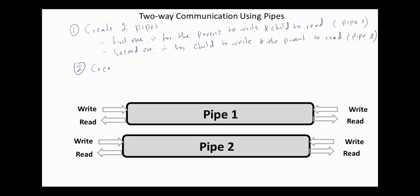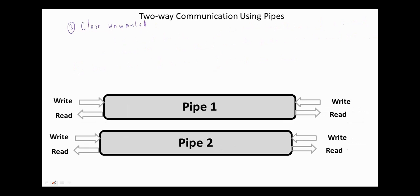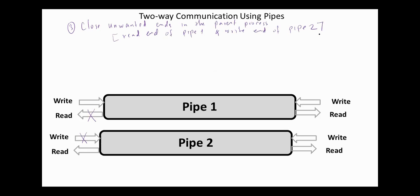Next, we close the unwanted ends. In the parent process, we close the read end of pipe one and the write end of pipe two. This is done using close(pipefd_s1[0]) and close(pipefd_s2[1]), on the parent side.